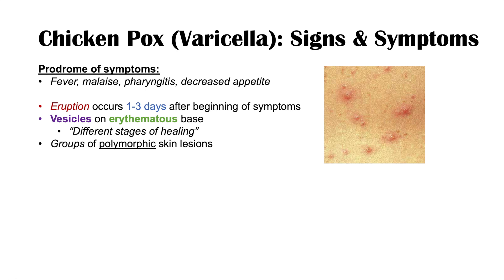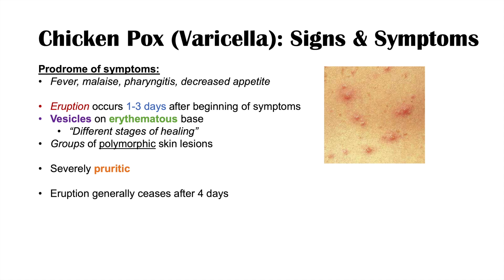We see groups of polymorphic skin lesions — polymorphic meaning the groups of skin lesions all look different. Another key characteristic is that these vesicles are very pruritic, meaning very itchy. The eruption generally ceases after about four days. The vesicles can be widespread, but most of the time they appear on the face and the trunk.